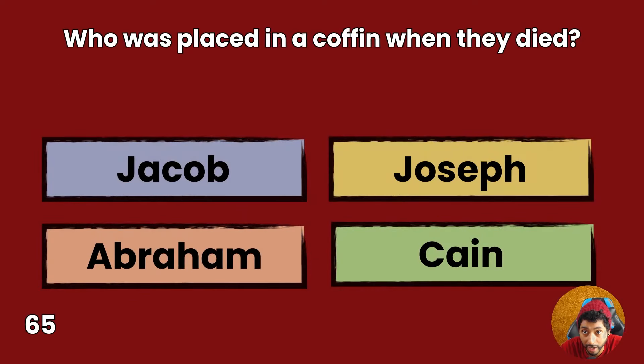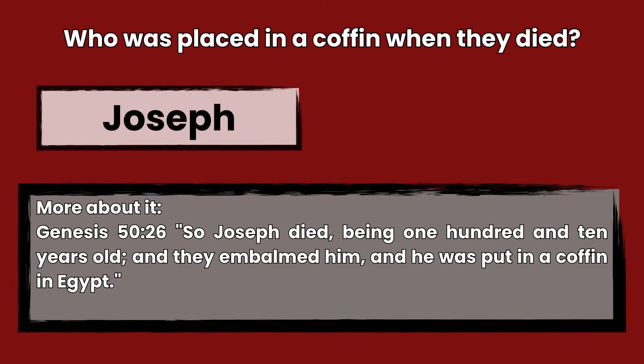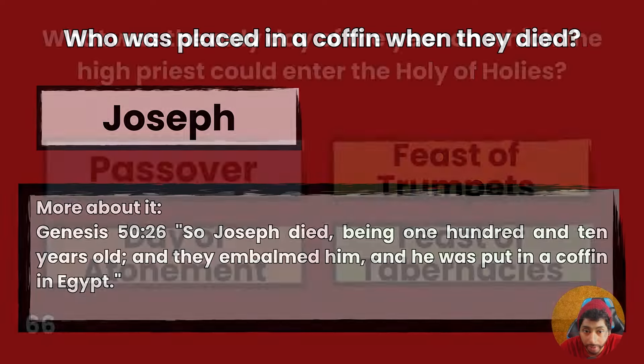Question 65: Who was placed in a coffin when they died? Jacob, Joseph, Abraham, or Cain? Answer: Joseph. Genesis 50:26 — So, Joseph died being 110 years old, and they embalmed him, and he was put in a coffin in Egypt.